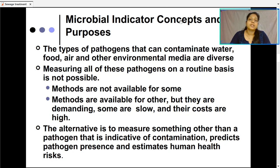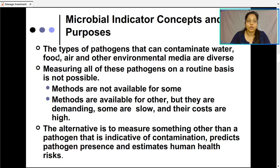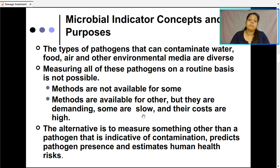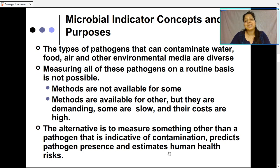To assess whether these control factors are working properly, we use microbial indicator concepts. This microbial indicator concept relates to the fact that the types of pathogens that can contaminate water, food, air, and other environmental media are diverse. It is difficult — next to impossible — to measure all these pathogens on a routine basis, because methods are not available for some microorganisms, and where methods exist they may be very demanding, costly, or slow. So the alternative is to measure something other than a pathogen that is indicative of contamination and helps predict pathogen presence and estimate human health risk.